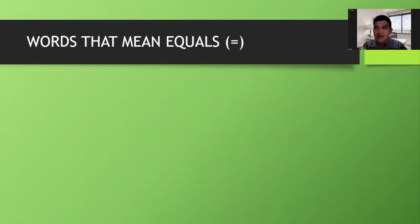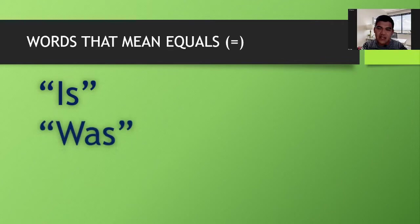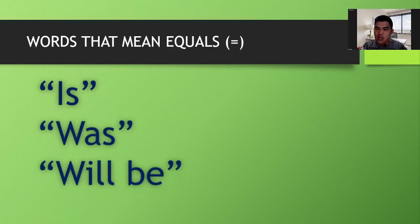There are also words that mean equals. The first one is 'is' — this denotes equals. The past tense of 'is' is 'was,' and sometimes statements are expressed in past tense, so 'was' or 'will be' can also indicate equality.